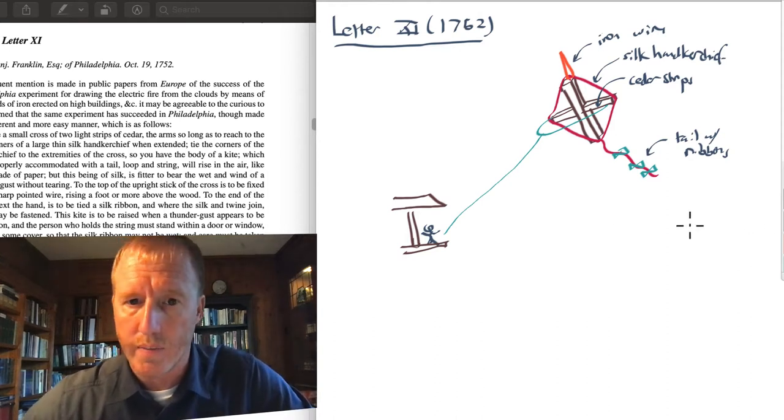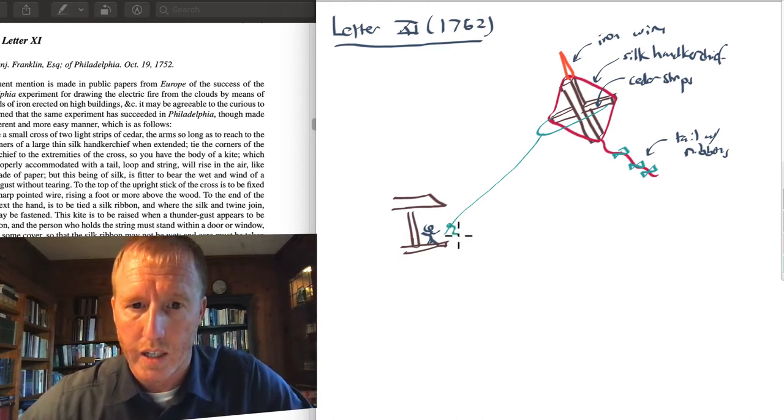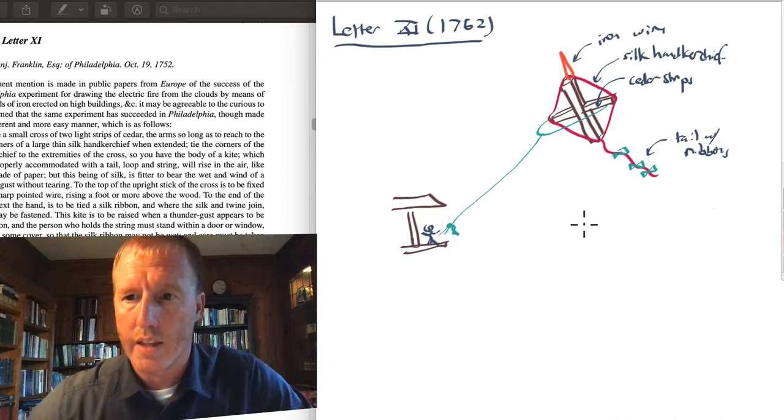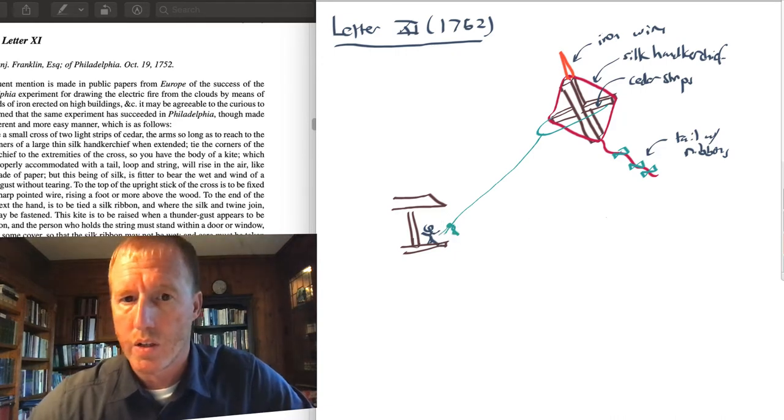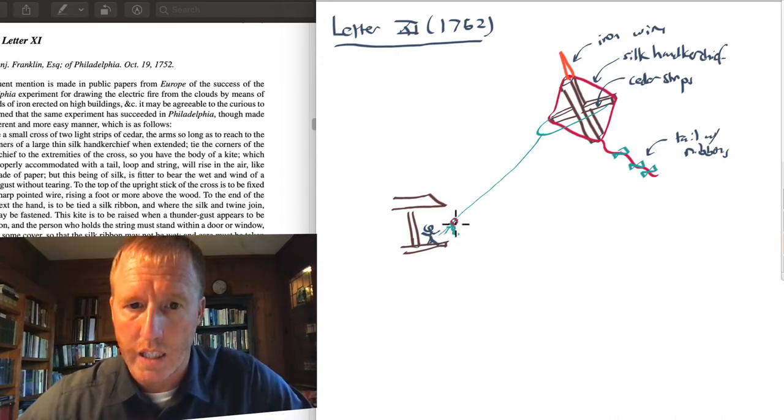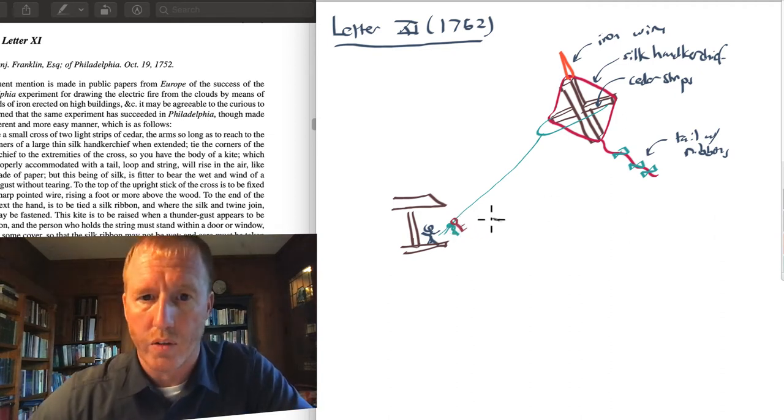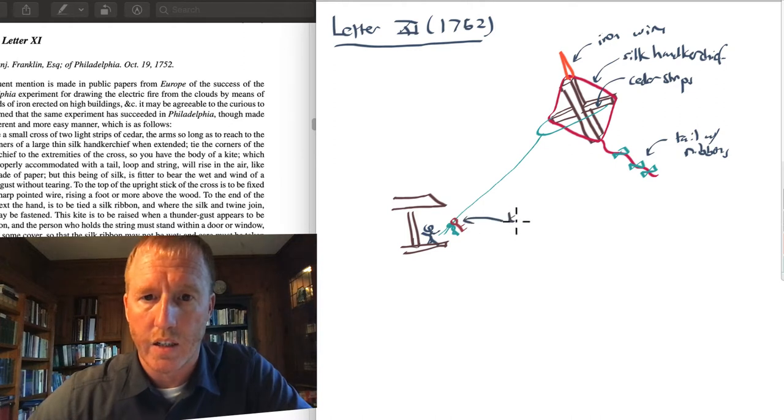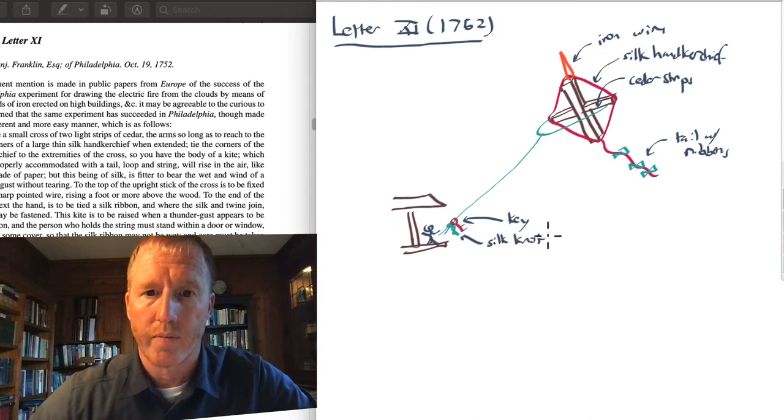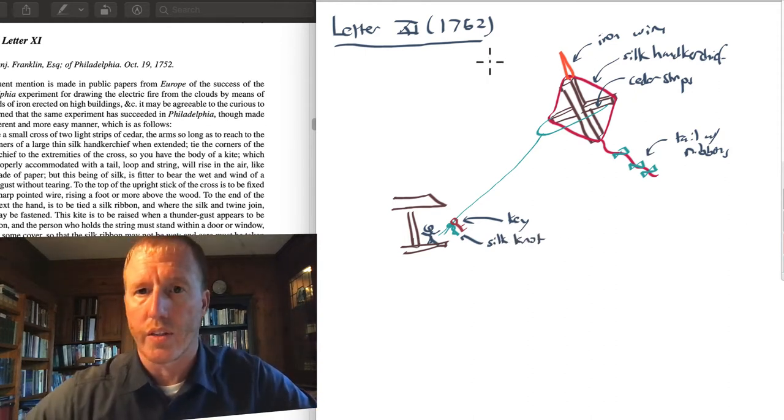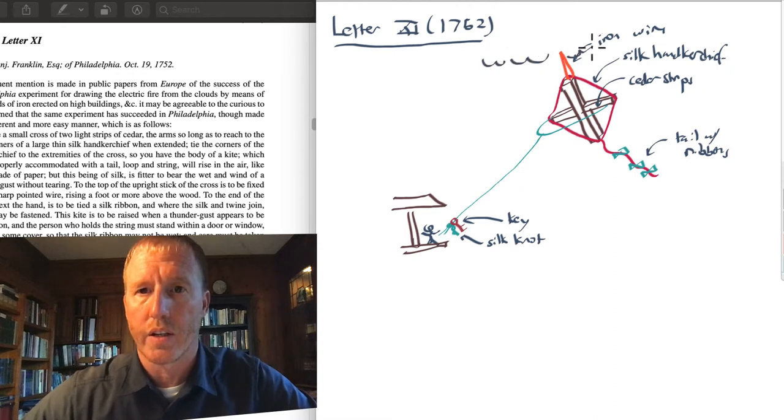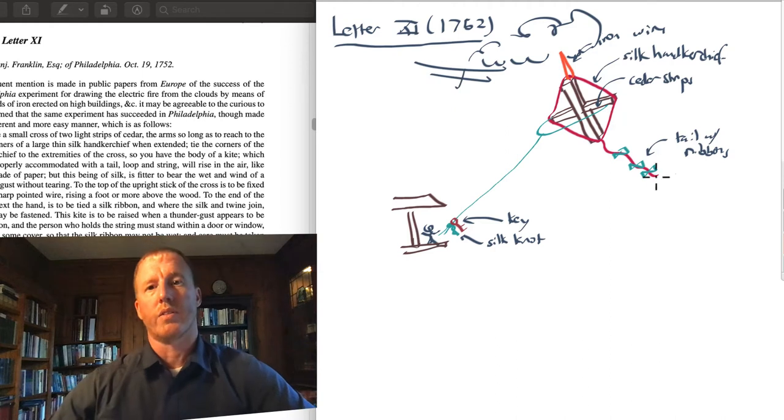And down here, there's a silk ribbon tied to the string. And that silk ribbon keeps a small key from sliding down. Okay, so we've got a key right here, and a silk knot, you might say. And then you wait until a thunderstorm comes in. Here's your thunderstorm, like this, that comes in.